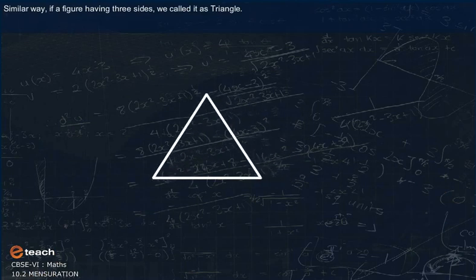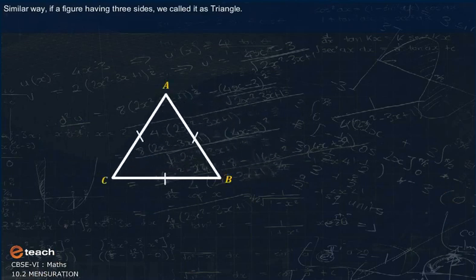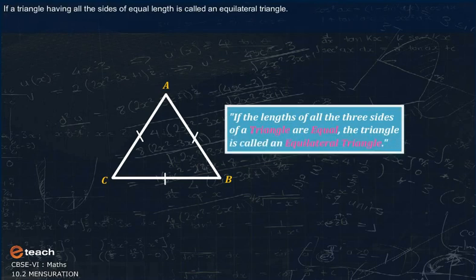Similarly, if a figure has three sides, we call it a triangle. A triangle having all sides of equal length is called an equilateral triangle.